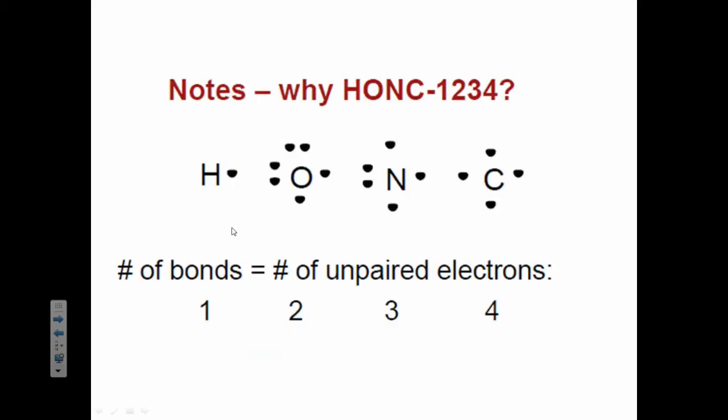So back to H-O-N-C 1, 2, 3, 4. Why does that make sense? Well, hydrogen forms one bond because it has one lonely electron. Oxygen forms two bonds because since it has six valence electrons, it's got two lonely ones. Nitrogen, we already saw, has three lonely electrons, and carbon has four places where it can form a bond.